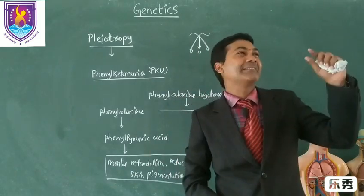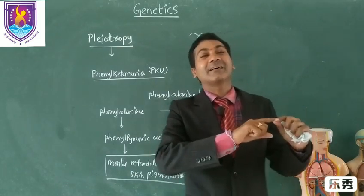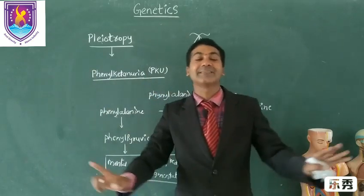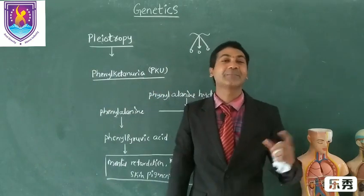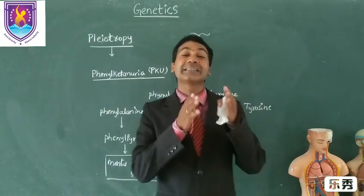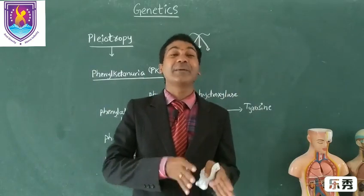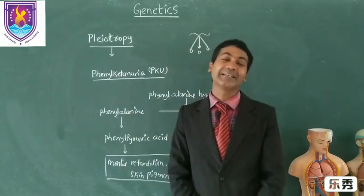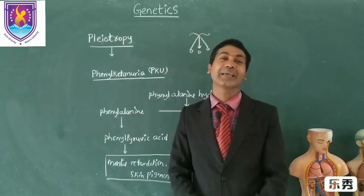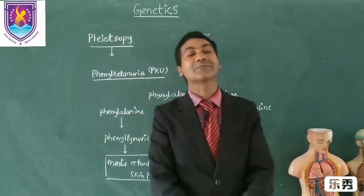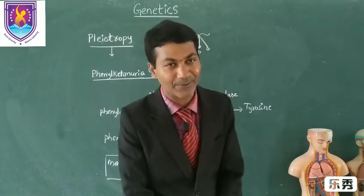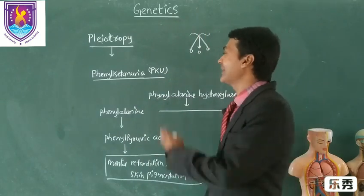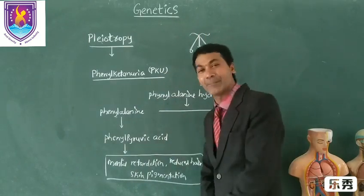Generally we think that a gene is controlling a character — that's it. But sometimes a single gene may control many phenotypic traits in our body. That phenomenon is called pleiotropy. Let us understand by taking one example.